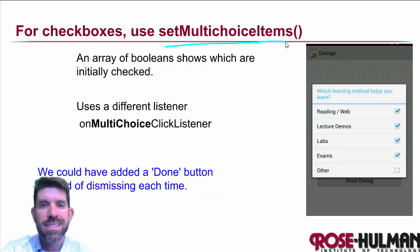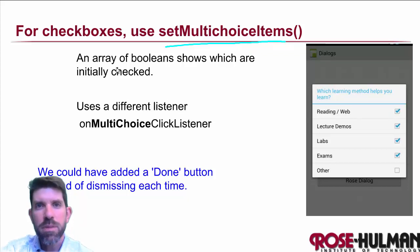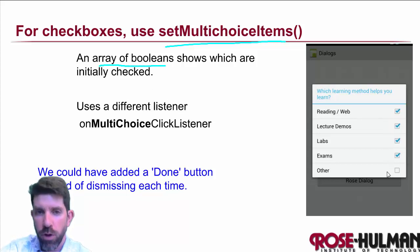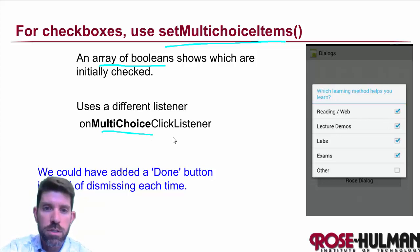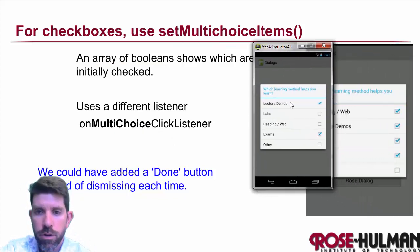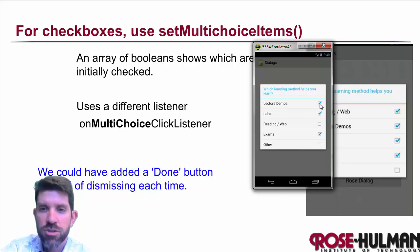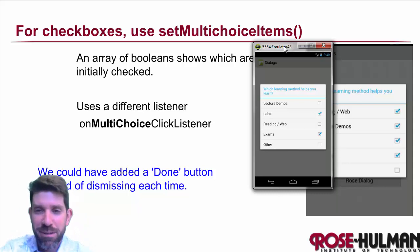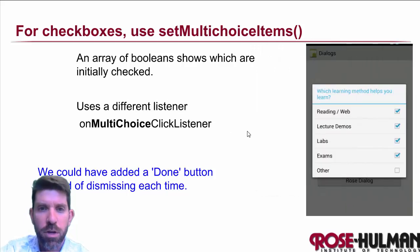For checkboxes, use setMultiChoiceItems. Instead of a single index, you pass in a boolean array indicating which items are initially checked — for example, true, true, true, true, false. The listener is different too: it's an OnMultiChoiceClickListener. Let's look at the emulator — clicking labs says 'Yay for labs', and unchecking lecture demos can say something like 'Boo for lecture demos'.